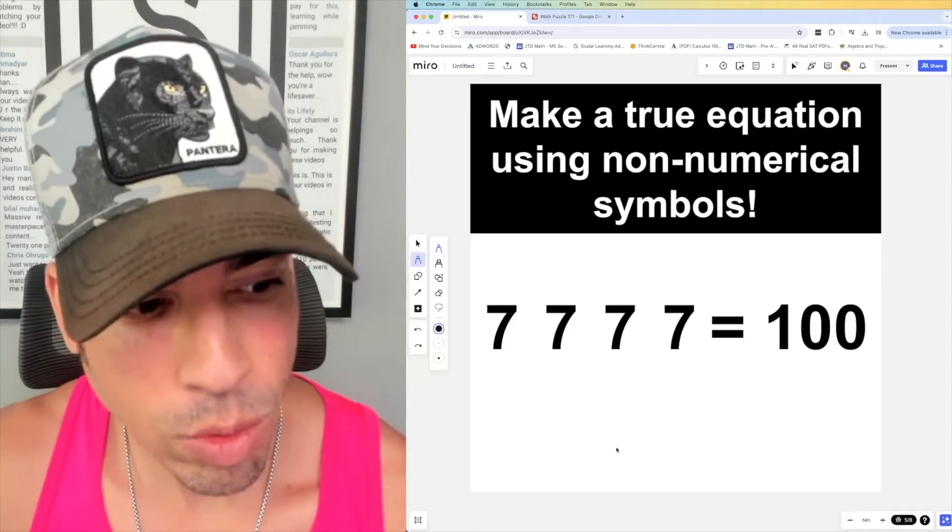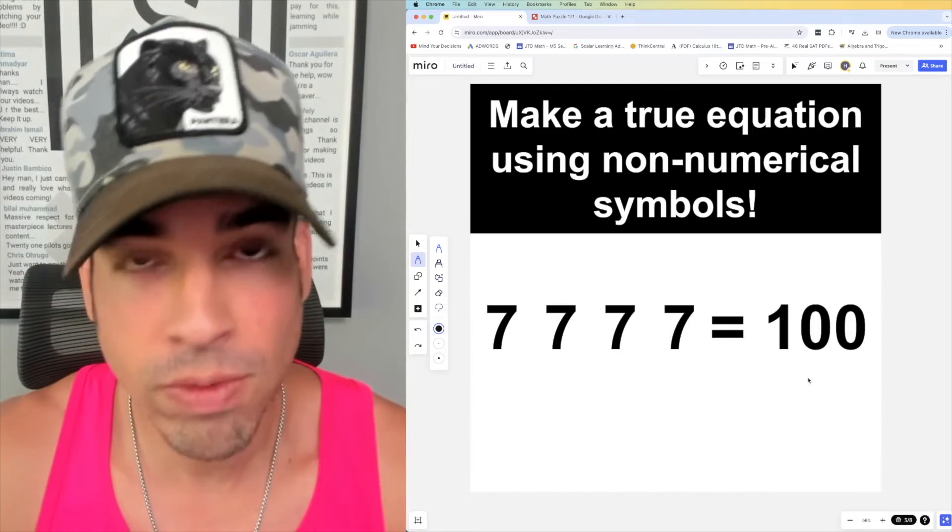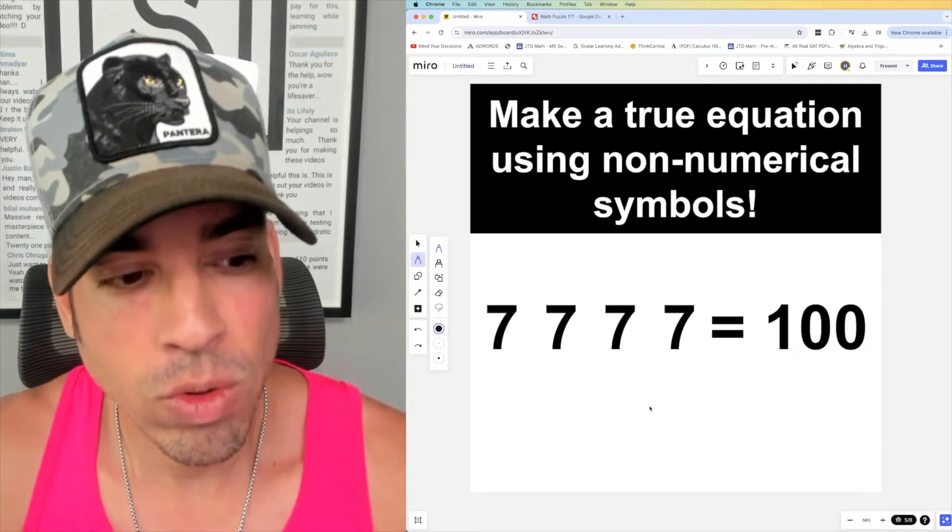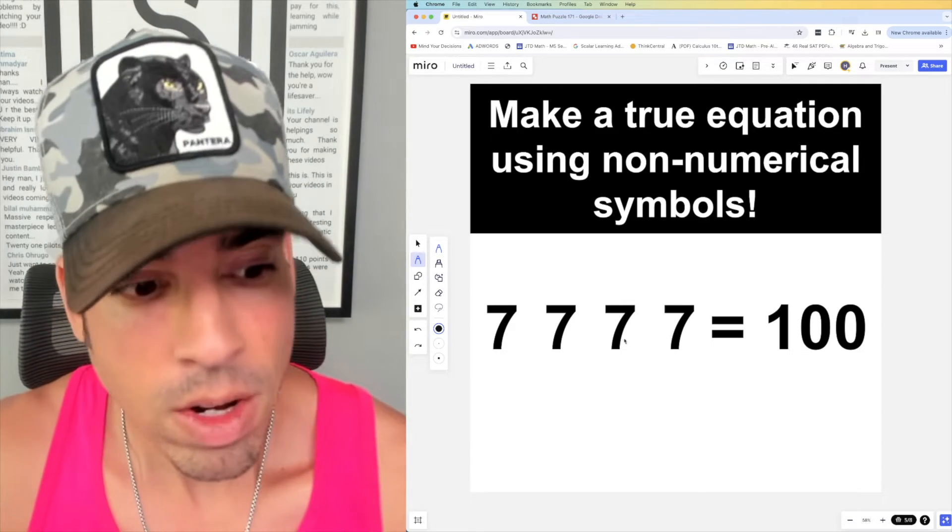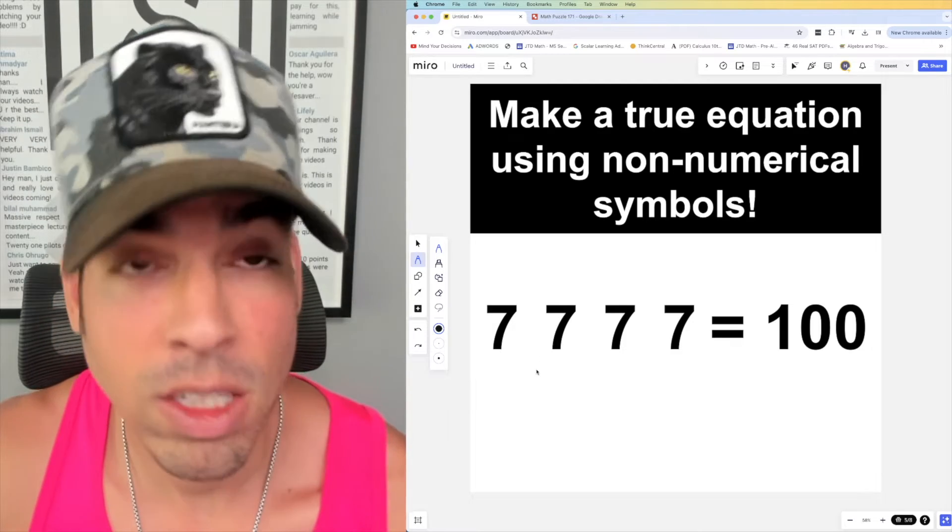Alright, so when we look at something like this, we look at 100 and we know that the factors are like 2, 5, 10, 1, etc., 20, so on and so forth, 25. So nothing with 7, right? So what do we have to do? As a result, we have to modify these numbers. So this is one solution.